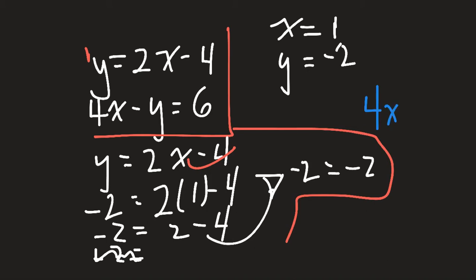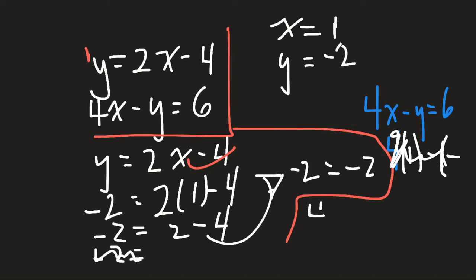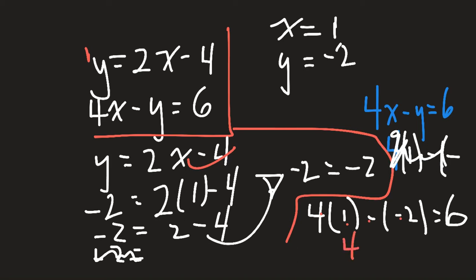Now for equation 2: 4x minus y equals 6. Let's substitute our values in. We get 4 times 1 minus (negative 2) equals 6. 4 times 1 is 4, and a negative times a negative makes a positive, so that's 4 plus 2 equals 6. You can tell that 4 plus 2 does equal 6 — this is correct as well. We've checked both answers and found by substitution our intersection point of our two lines.